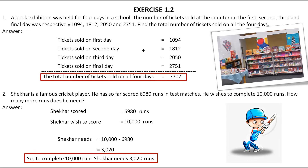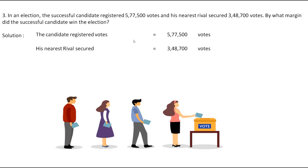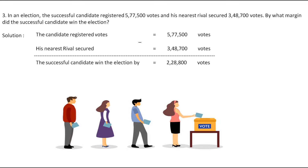Now let's move to the next question. In an election, the successful candidate registered 5,77,500 votes and his nearest rival secured 3,48,700 votes. By what margin did the successful candidate win the election? As everyone knows, the candidate with the highest votes is the successful candidate. So we subtract to find how many extra votes he got. The successful candidate won the election by 2,28,800 votes. This is the final answer of this question.